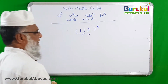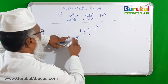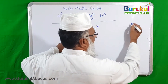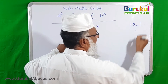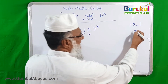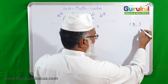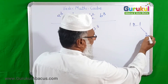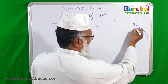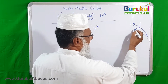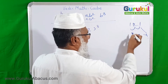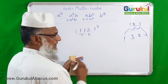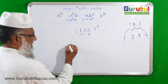Now we are going to solve the example. First, cube of 11. We know 11 squared is 121, and now we multiply by 11 again. Using the trick of multiplying by 11: one, one-and-two is three, three, two-and-one is three, one. So the answer is 1331. That means cube of 11 is 1331.